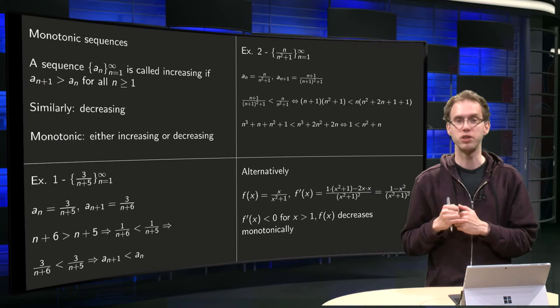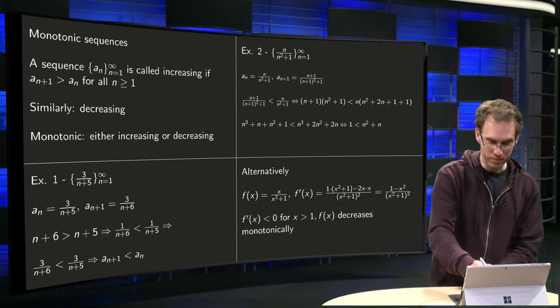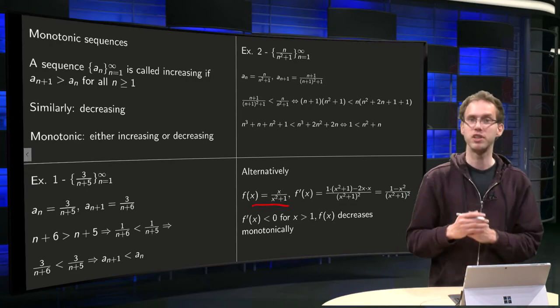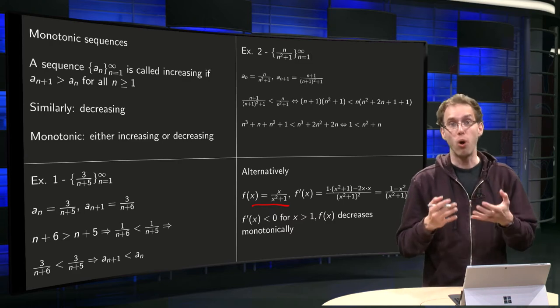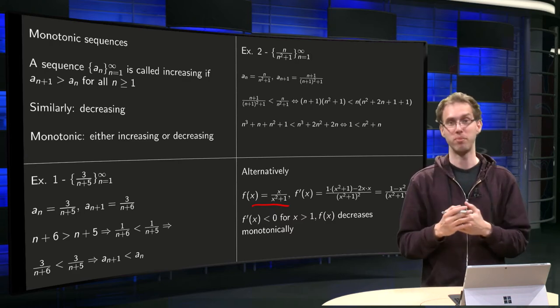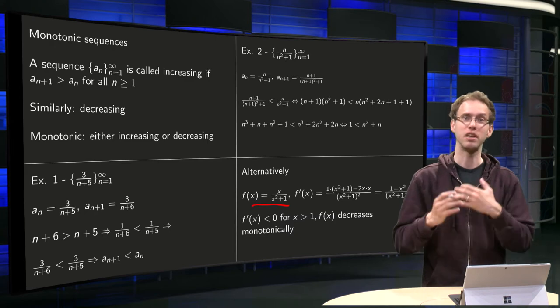So the second approach, alternative, you define the corresponding function f, f(x) equals x/(x²+1). This could go wrong because f contains more information than the sequence An, but let's see what happens.